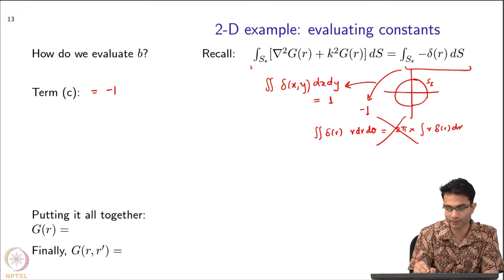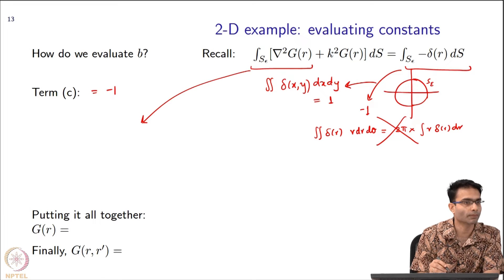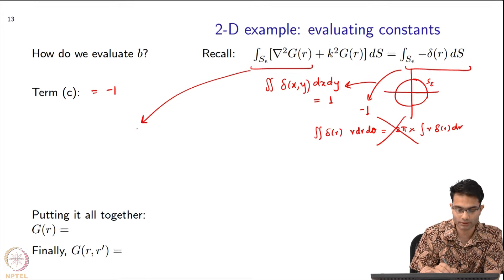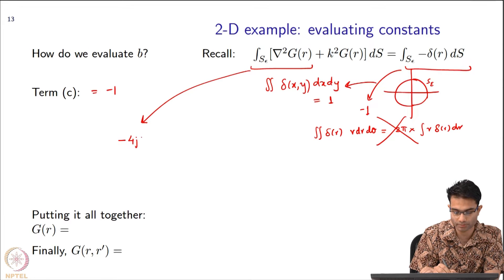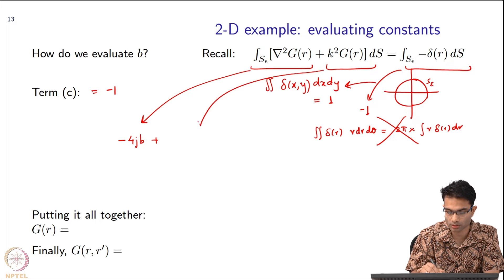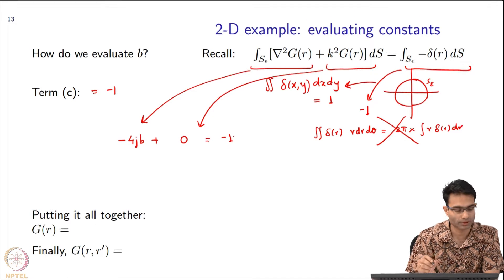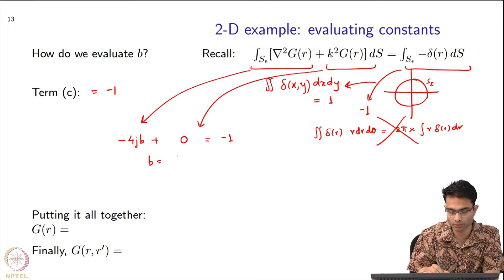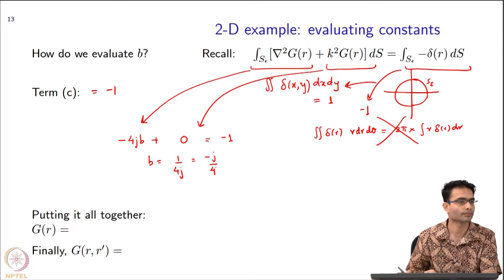That term c equals minus 1. Finally, what did we have left over here? The first term gave us -4jb, the second term gave us 0, and finally we have -1. So b = 1/(4j) = -j/4.